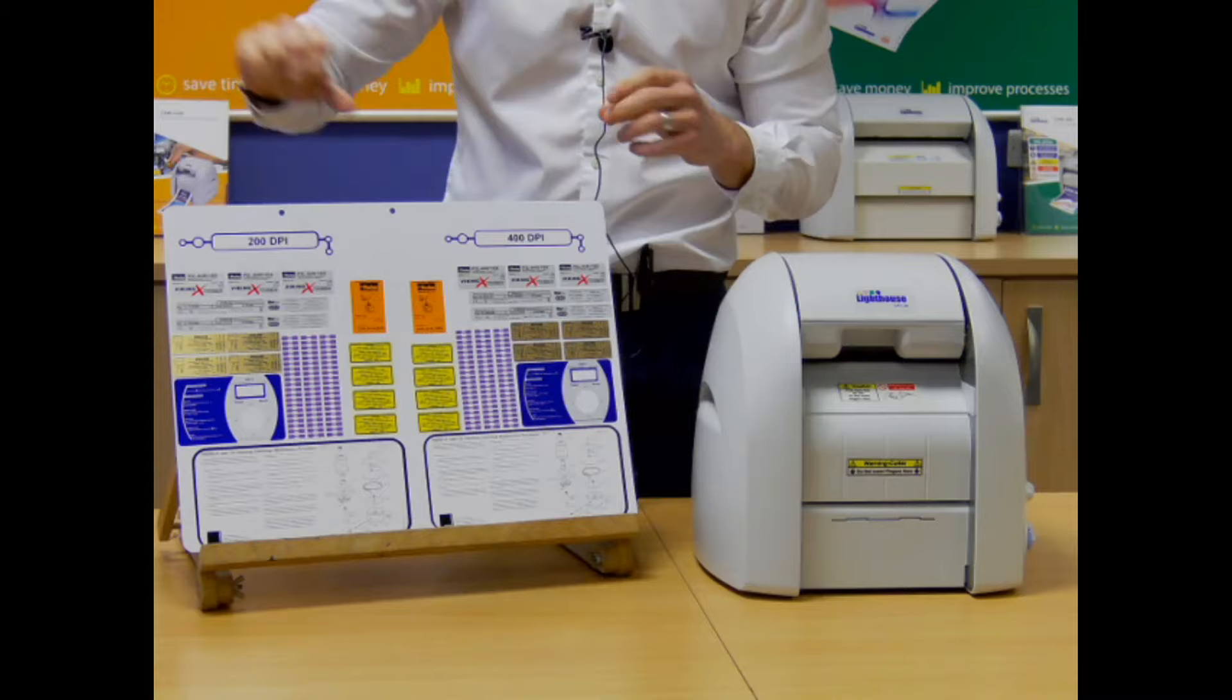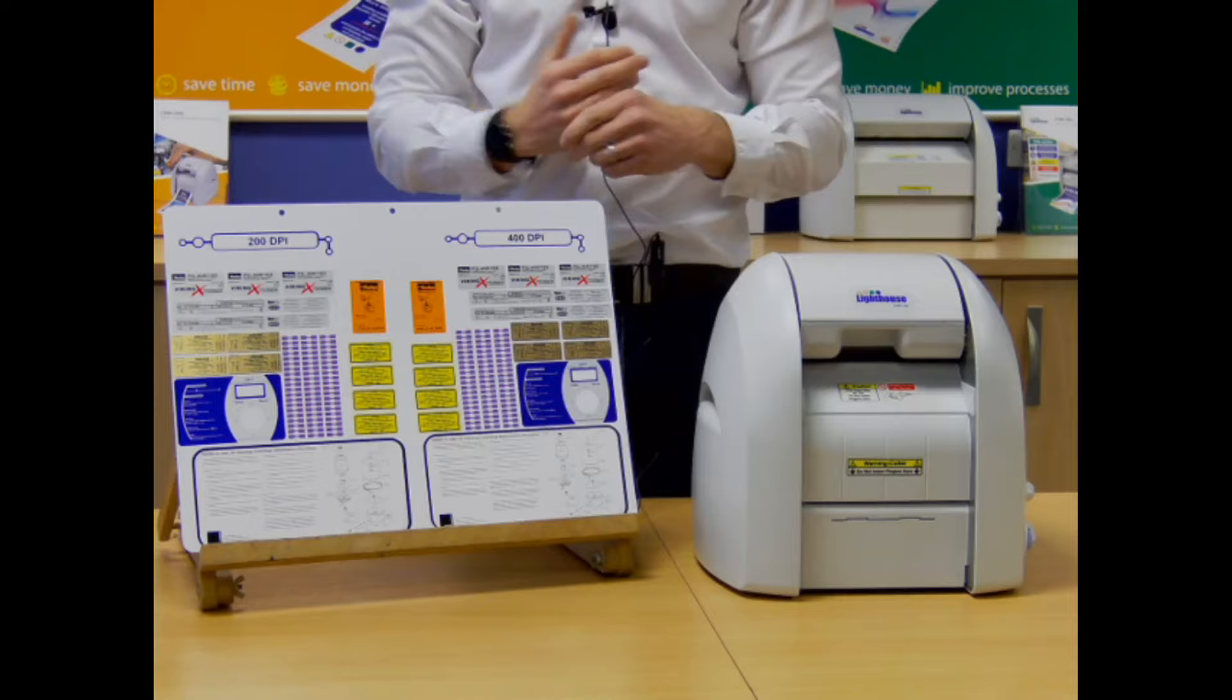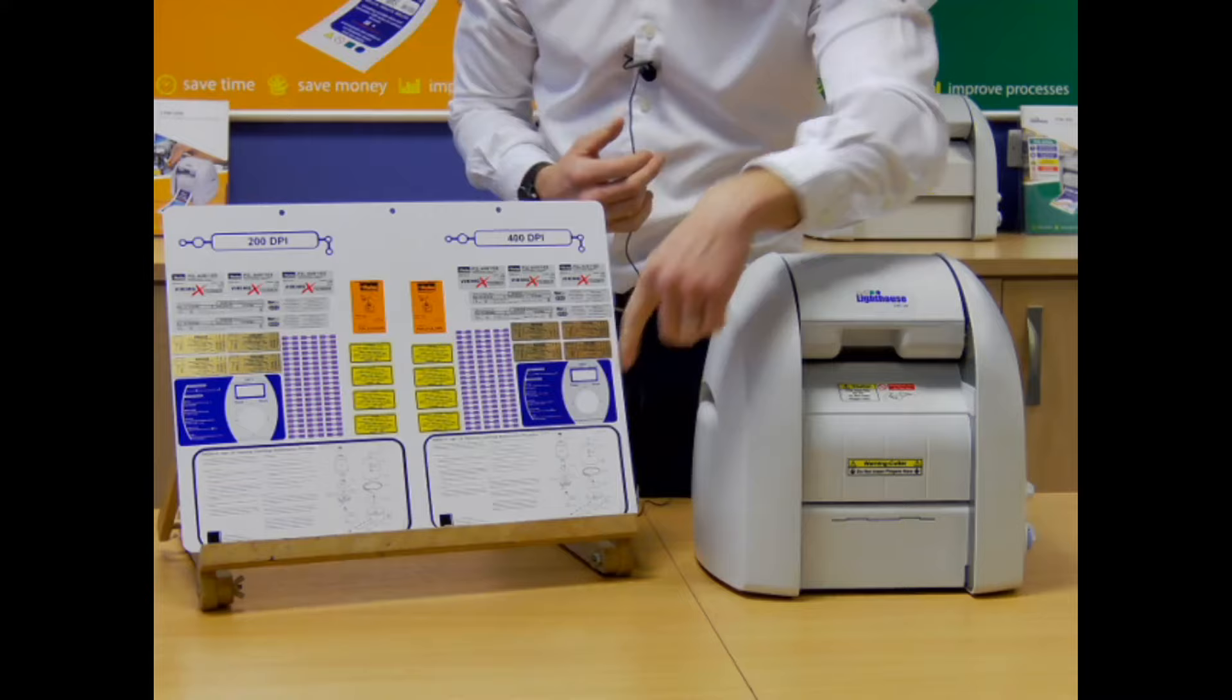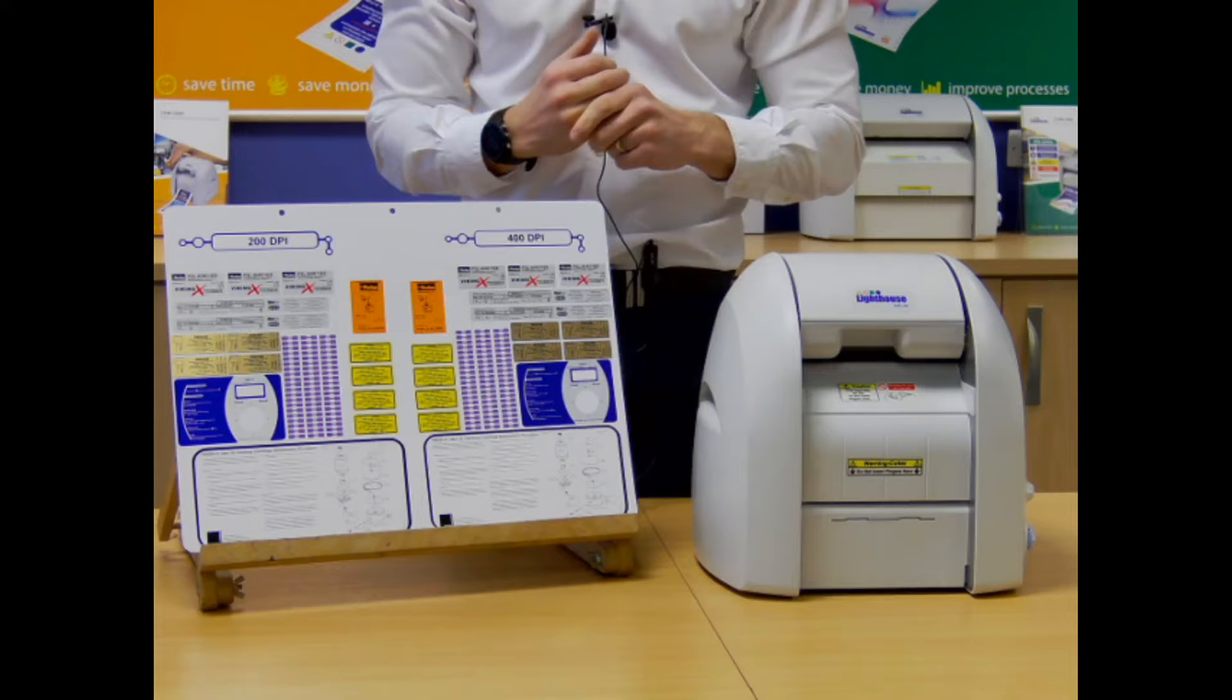This board shows the 200 DPI on your left, 400 DPI on your right. It just shows you the detail that you can go down to. That's the first main difference between the two versions is the definition. When you're doing things like the bottom label here, if you're doing line drawings or going down to really fine font size, then you do need the 400 DPI system.